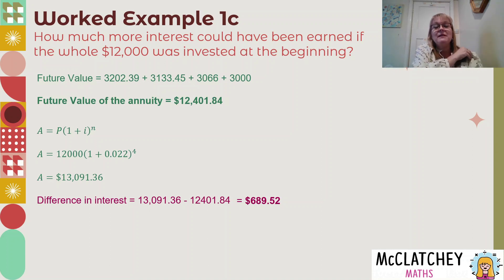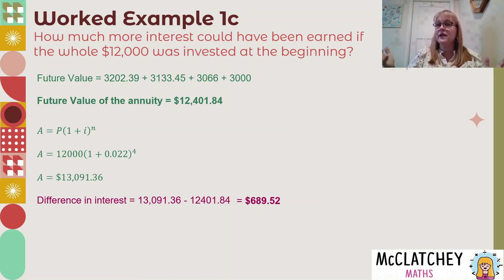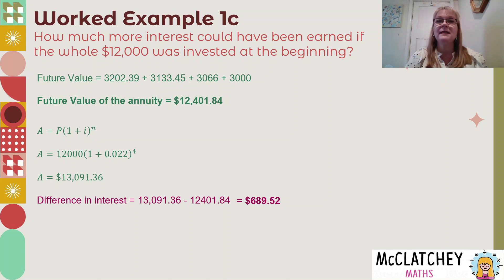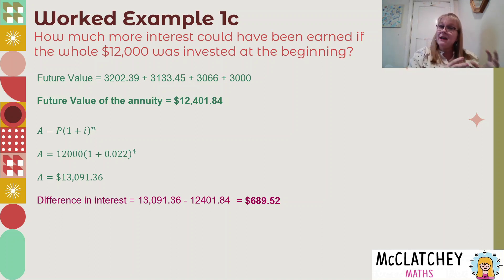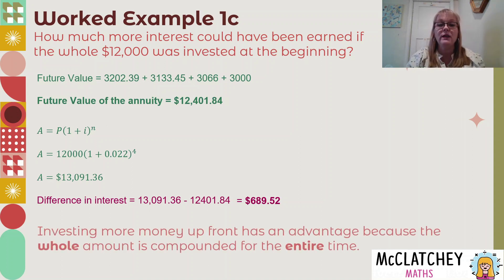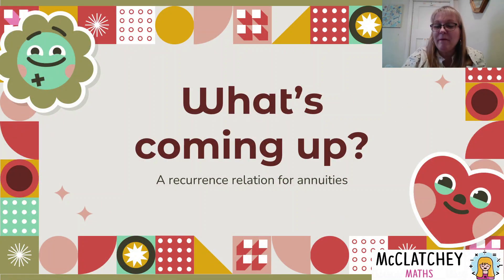You might wonder: why not just put the $12,000 in at the beginning and leave it there? Why bother with an annuity if you end up with $600 less interest? The reason is that not everybody has $12,000 to invest at the beginning. Most of us need to save and add to our investment over time. With superannuation you might want to end up with a million or two million dollars to retire on — very few of us have half a million when we're 20. That's why we put in small amounts every single week, and the power of compound interest causes that investment to grow.